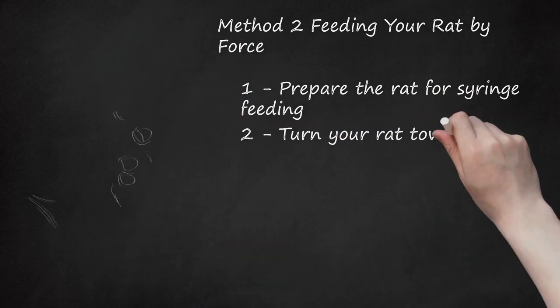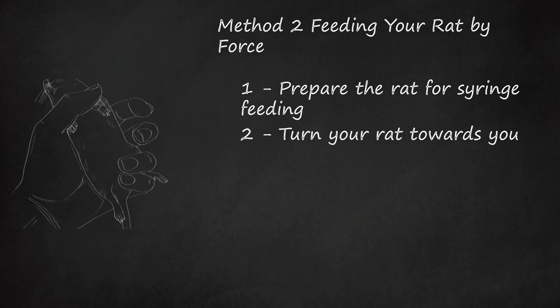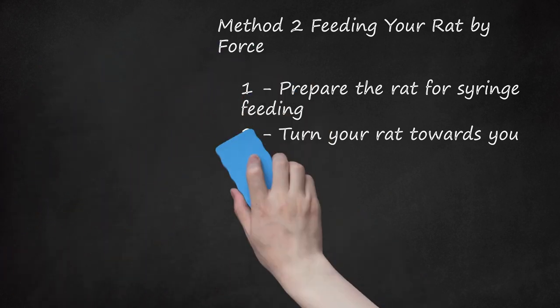2. Turn Your Rat Towards You. Once you've restrained your rat, move his right leg between your ring and pinky finger. This will prevent him from pushing the syringe away. Then, gently turn his head towards you. Position his mouth at an angle from which you can easily administer the syringe.